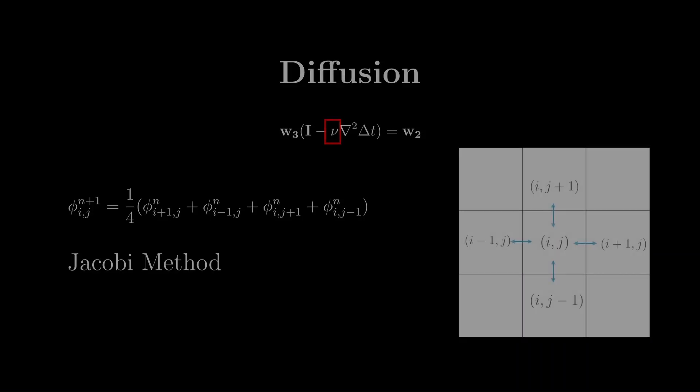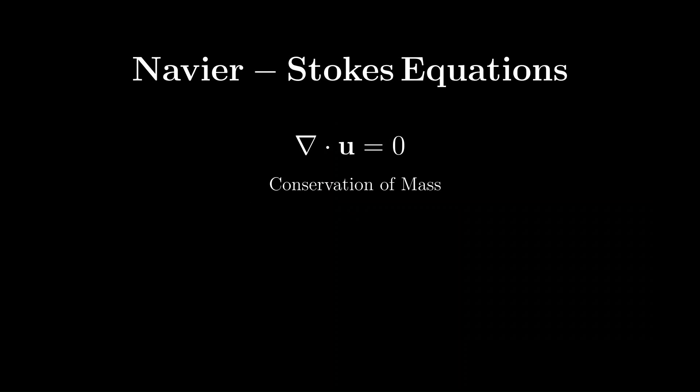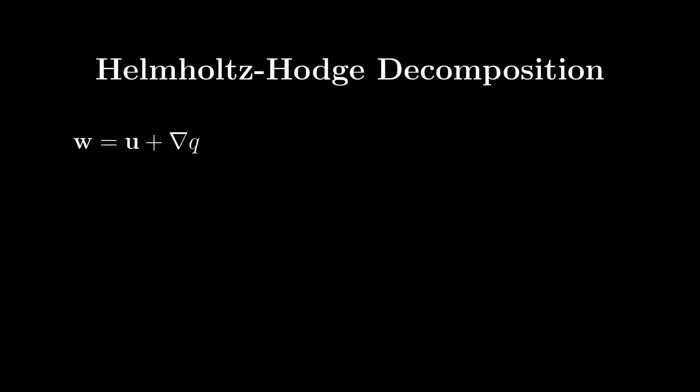Lastly, we look at the first Navier-Stokes equation describing conservation of mass. To ensure that this condition is kept, we need to use a mathematical result called Helmholtz decomposition, which states that any vector field w can be uniquely decomposed into a divergence-free part u and gradient field q. Our goal is to find a way to project our velocity field w into the divergence part u. In other words, our goal is to solve for u.